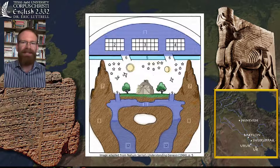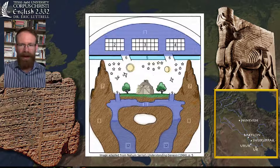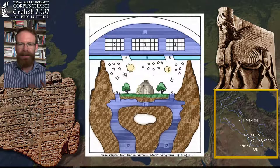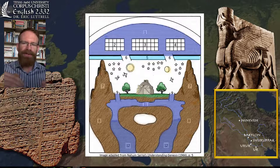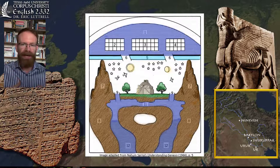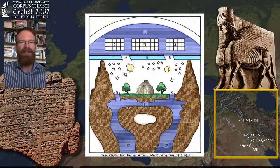We know how diseases work. We know how droughts work, and we know how floods work scientifically. We're going to see diseases, droughts, and floods in Atrahasis, and we know how these work from a scientific standpoint. But to understand the text and narrative of Atrahasis, and the world that produced it, we have to imagine their metaphorical conception.